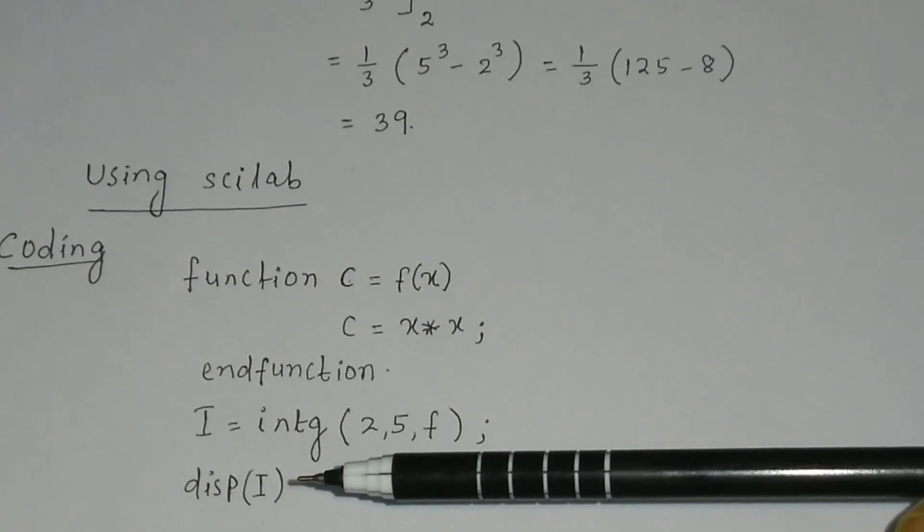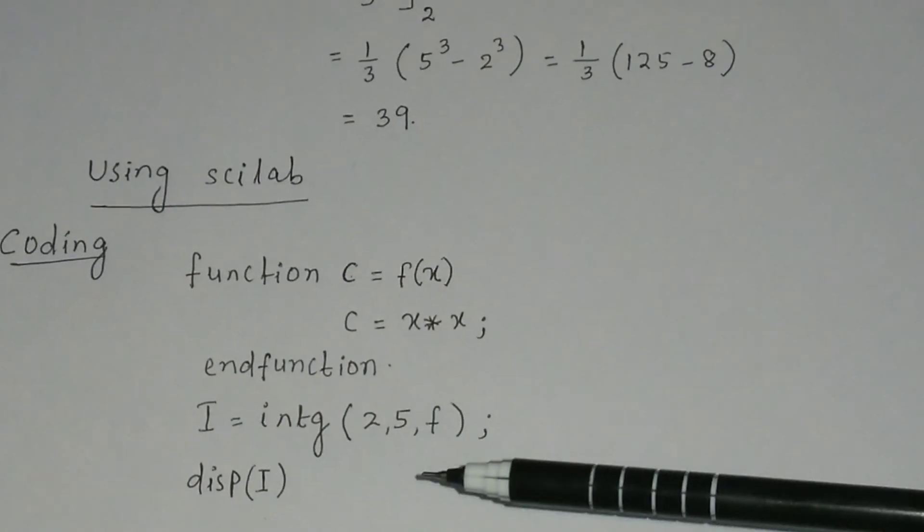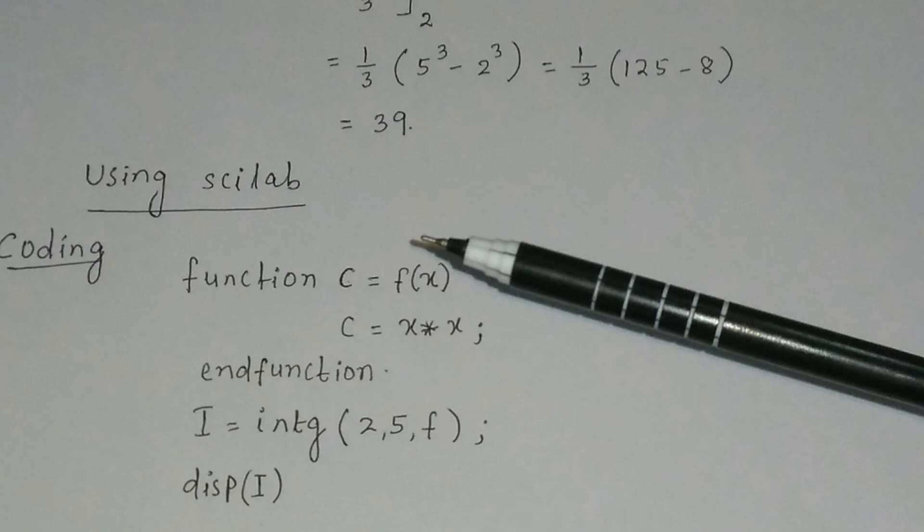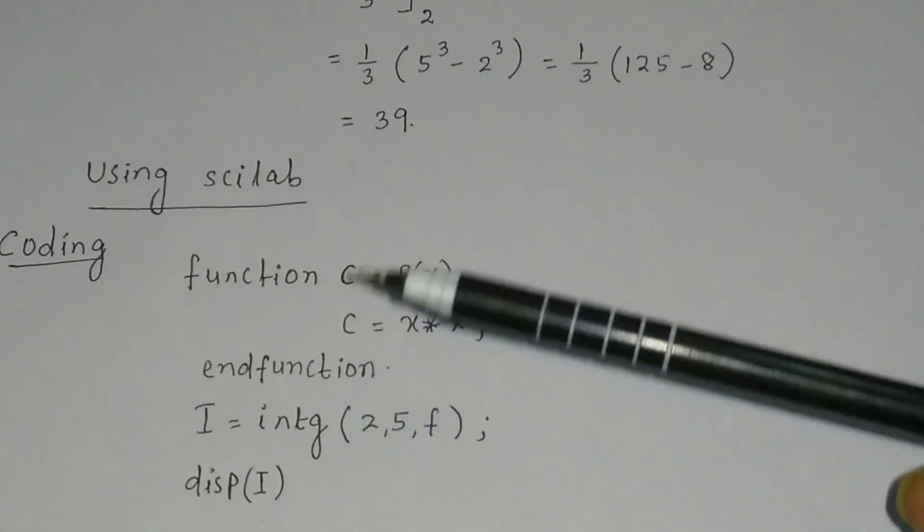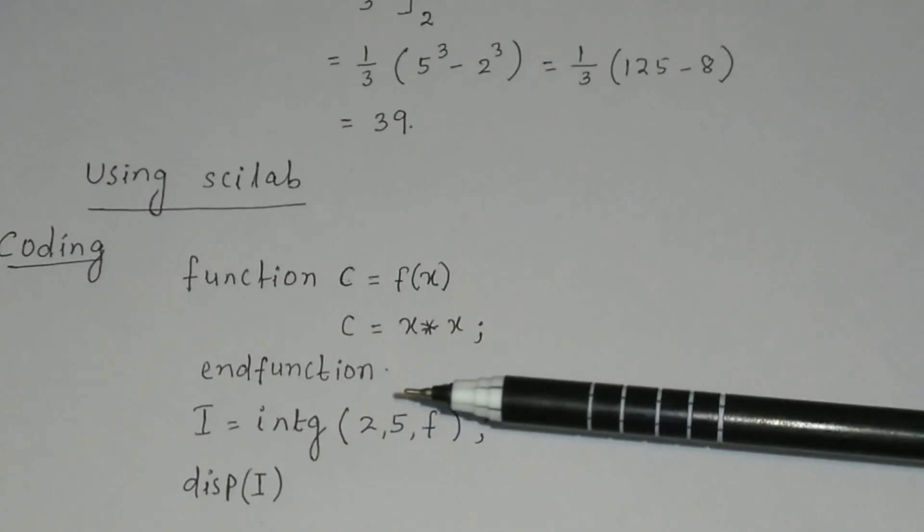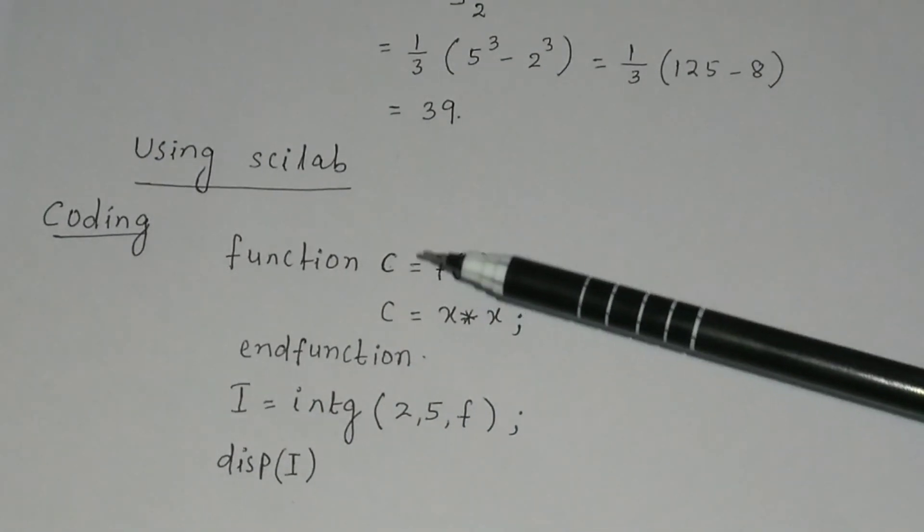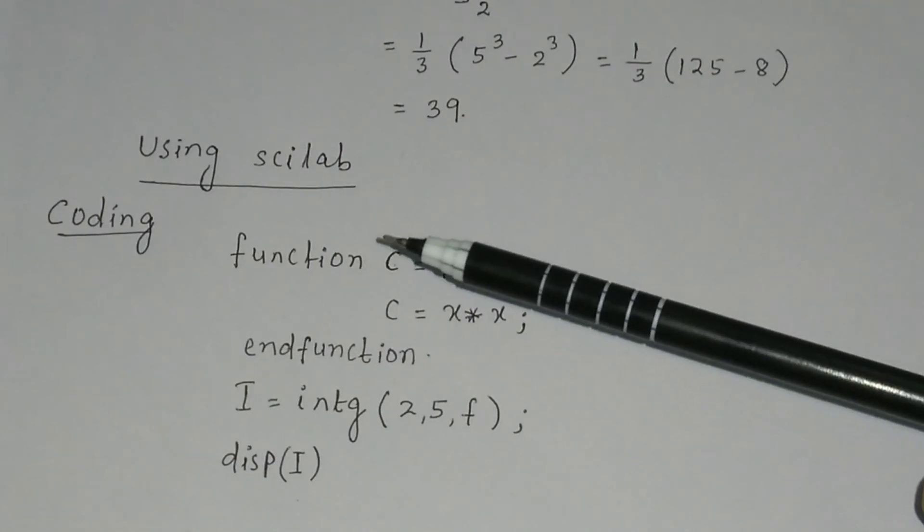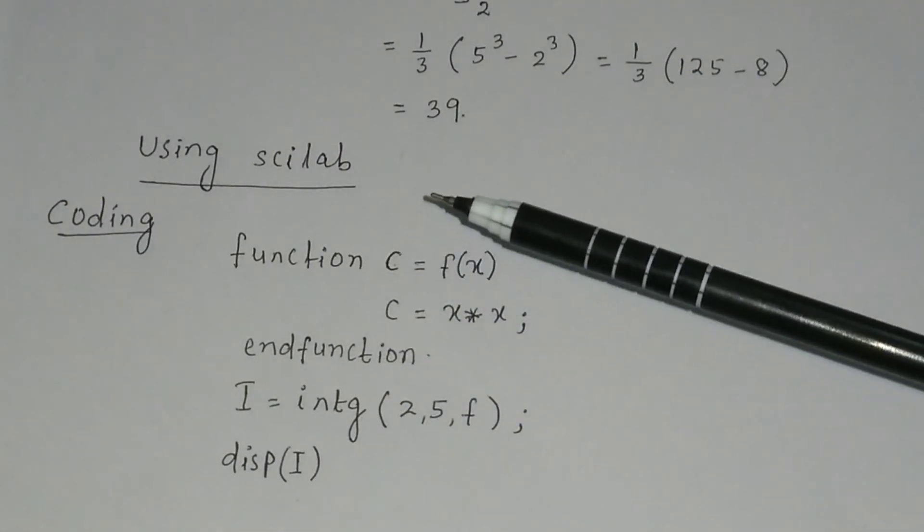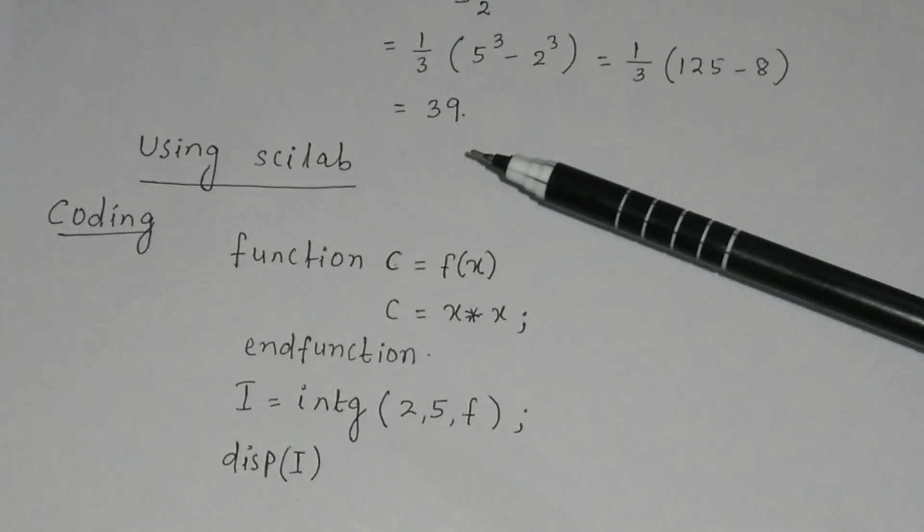Then display i. After save and execute, the value of the integration that is 39, it will be displayed in the answer in Scilab console. Now we will write the coding in Scilab console and we will find out the value of the integration whether it will be 39 or not.